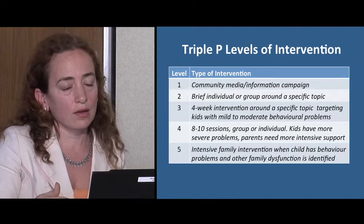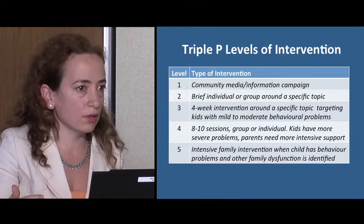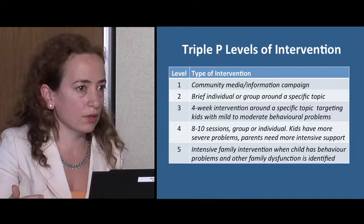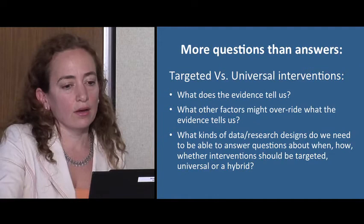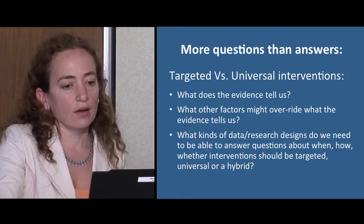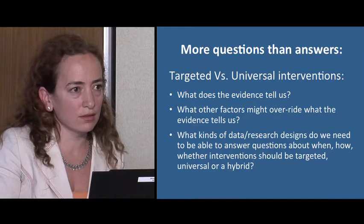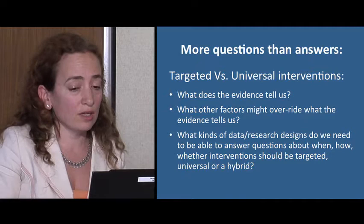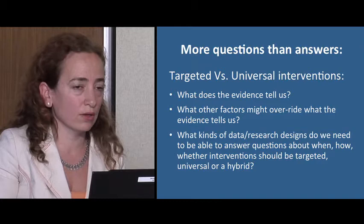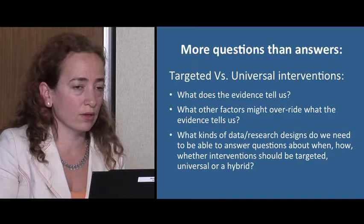It's universal in the sense that everybody gets something, but the level of what they get varies based on need. In terms of efficiency, I think that's an approach that makes a lot of sense, though it may not work in all contexts. Thinking about targeted versus universal may look different across different policy arenas. Overall, I've got more questions than answers. What does the evidence tell us? What other factors might override what the evidence says? What kinds of research designs do we need to study this question in a more informed way?